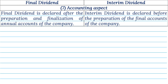Point 7 — Accounting Aspect: Final Dividend is declared after the preparation and finalization of annual accounts of the company. Interim Dividend is declared before the preparation of the final accounts of the company.